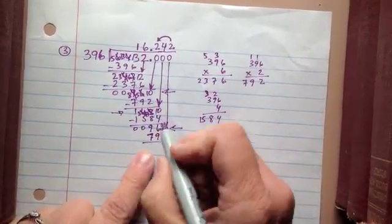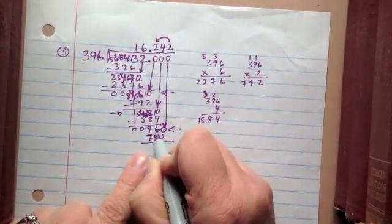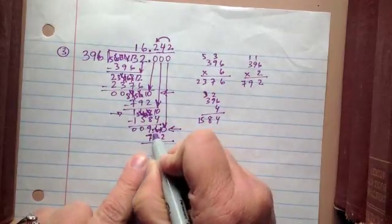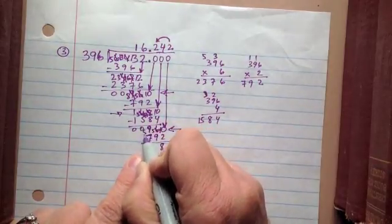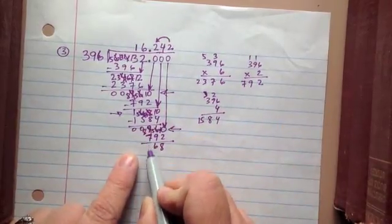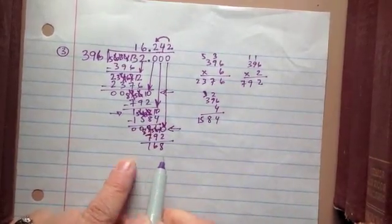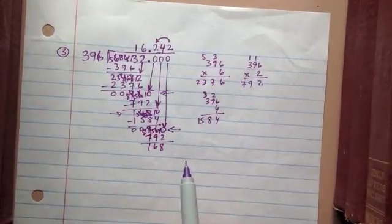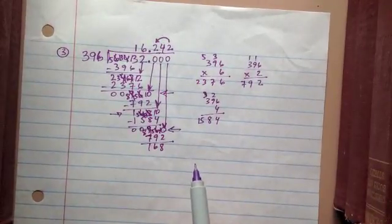0 minus 2, can't do. 10 minus 2 is 8. 5 minus 9, can't do. 15 minus 9, is 6. 8 minus 7 is 1. I now have 168.